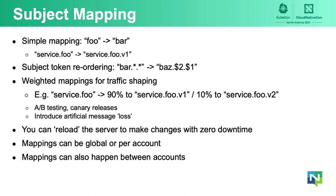Moving on from JetStream, one of the unique functionalities of NATS is subject mapping. Subject mapping is the ability to say that any message published on subject Foo will be rewritten to be on subject Bar. The obvious interest is that it gives you administrative control over the subject namespace. For example, you can map messages sent to service.foo to service.foo.v1, and then later change that mapping to service.foo.v2. Subject mapping also allows you to reorder tokens in a subject.